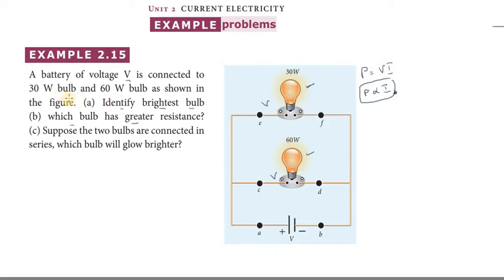Second part, which bulb has greater resistance? This relation is power equals V squared by R. Since this is parallel connection, P is inversely proportional to resistance.